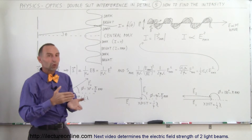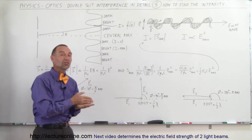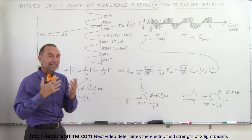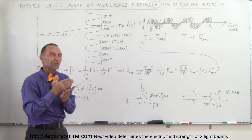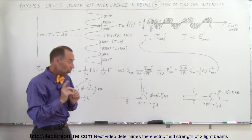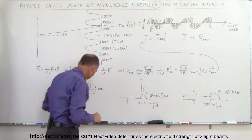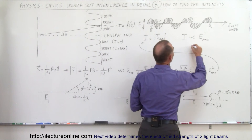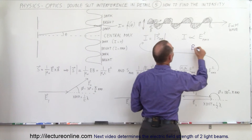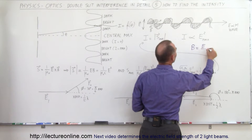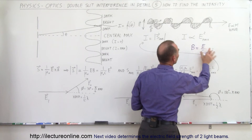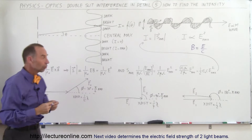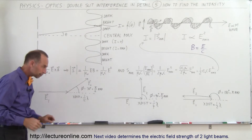The energy is half stored in the electric field oscillations and half in the magnetic field oscillations, but we can calculate in terms of the electric field oscillations alone because there's a relationship between them. We know that the magnetic field strength B equals E divided by the speed of light c, so we can calculate everything in terms of electric field oscillations alone.